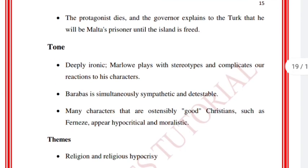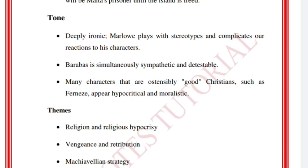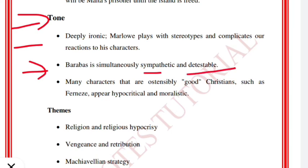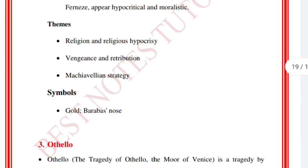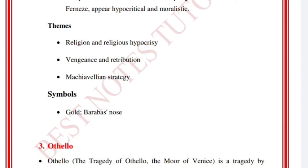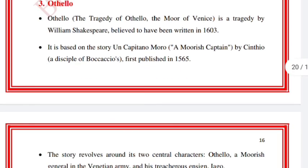The point of view: Marlowe, the playwright's ambiguous style, seems to condemn all the characters as immoral. Abigail's conversion to Christianity may be understood as the play's heavily ironic moral climax. The dramatic climax occurs in the final scene where Barabas's plot to kill Calymath backfires and Barabas dies in a cauldron. Barabas schemes to free Malta from Turkish rule but his plans founder when Ferneze saves Calymath's life. The tone is deeply ironic — Barabas is simultaneously sympathetic and detestable. Themes are religion, religious hypocrisy, vengeance, retribution, and Machiavellian strategy. Symbols are gold and Barabas's nose.